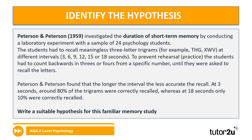Now we're going to do a little bit of work with a piece of research you might have come across before, which is by Peterson and Peterson. Peterson and Peterson investigated the duration of short term memory by conducting a laboratory experiment with a sample of 24 psychology students. The students had to recall meaningless three letter trigrams — for example, THG, X, W, V — at different intervals: 3, 6, 9, 12, 15, or 18 seconds. To prevent rehearsal, the students had to count backwards in threes or fours from a specific number until they were asked to recall the letters. Peterson and Peterson found that the longer the interval, the less accurate the recall — at three seconds around 80% of the trigrams were correctly recalled, whereas at 18 seconds only 10% were recalled. Write a hypothesis for this particular piece of research in your booklet next to question six.